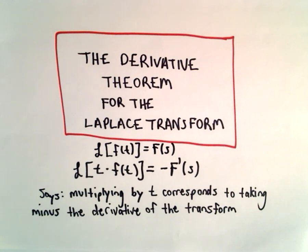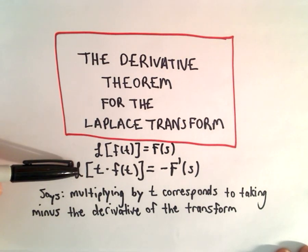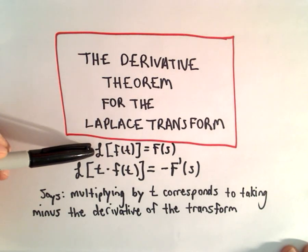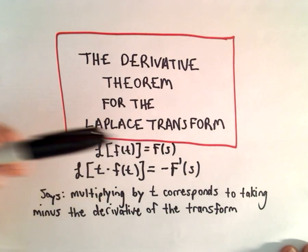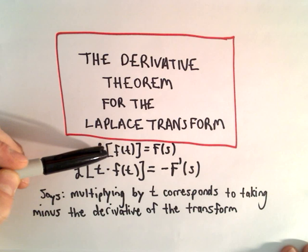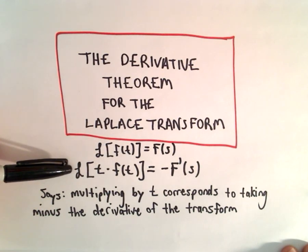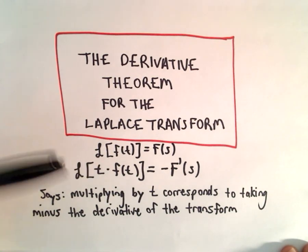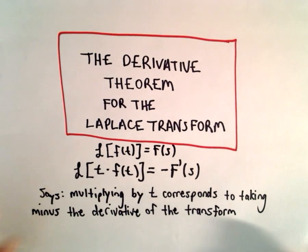In this video I'm going to talk about a useful little theorem for the Laplace transform. What I'm going to do is justify the result — it should be pretty straightforward — and then do a quick example. So what it says is: if we have the Laplace transform of some function f of t, which we denote as capital F of s, and if we multiply f of t by t and calculate the Laplace transform, we can find that new Laplace transform by simply taking the derivative and tacking on a negative sign.